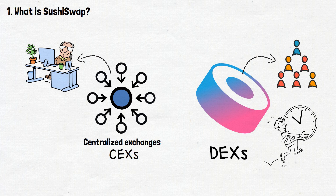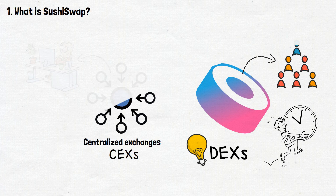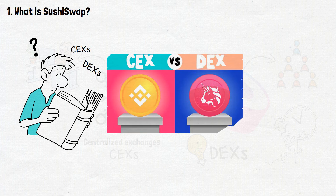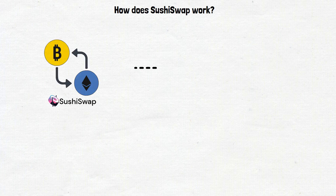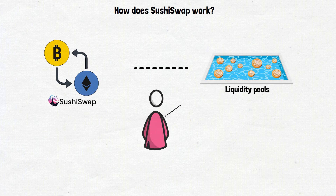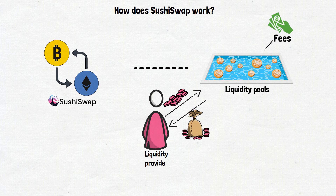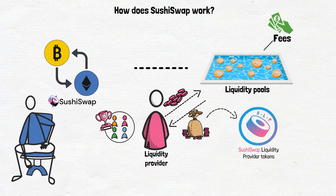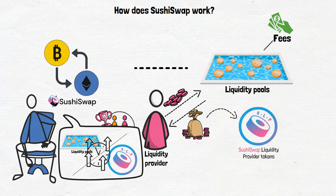Let's take some time to understand this decentralized exchange, or DEX, better. How does SushiSwap work? When you trade on Sushi, you're not directly swapping with another trader — you're trading with liquidity pools. When you contribute to a pool, you earn from the fees that it employs. As a liquidity provider, you become a part of the SushiSwap community and get rewarded. In exchange for providing liquidity, you receive SushiSwap liquidity provider, or SLP, tokens. We'll talk more about liquidity pools and SushiSwap LP tokens later.